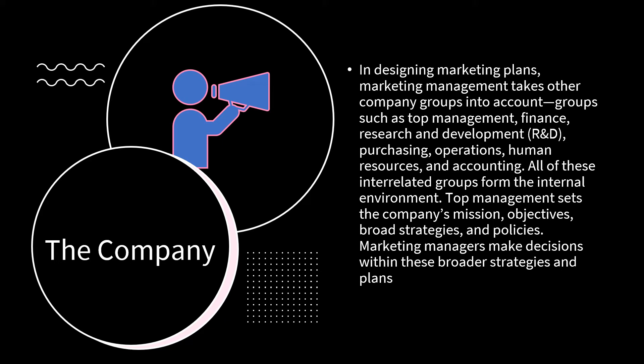Suppliers form an important link in the company's overall customer value delivery network. They provide the resources needed by the company to produce its goods and services. Supplier problems can seriously affect marketing. Marketing managers must watch supply availability and cost. Supply shortages or delays, natural disasters, and other events can cause sales losses in the short run and damage customer satisfaction in the long run. Rising supply costs may force price increases that can harm the company's sales volume. Most marketers today treat their suppliers as partners in creating and delivering customer value.